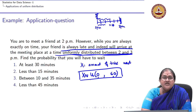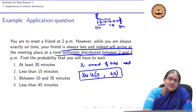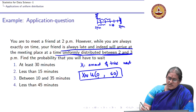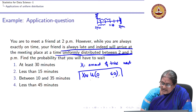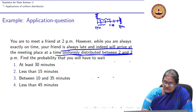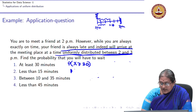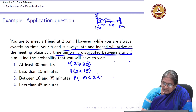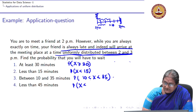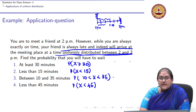Why is it a continuous random variable? Because we are measuring time, not counting, so it is continuous. Now X is uniform(0,60). Translating the questions: at least 30 minutes is P(X ≥ 30), less than 15 minutes is P(X < 15), between 10 and 35 minutes is P(10 ≤ X ≤ 35), less than 45 is P(X < 45).